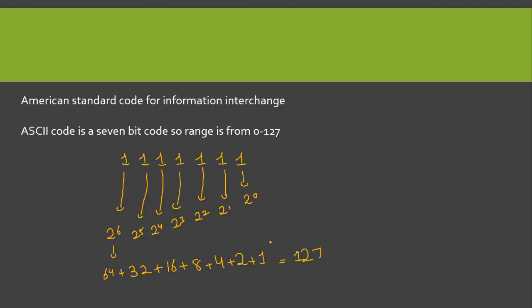So the maximum range is 1111111 which is 127, and the minimum range is when all bits are 0, giving us 0.